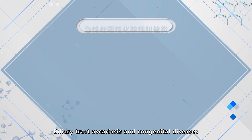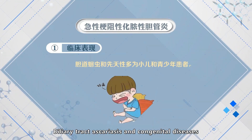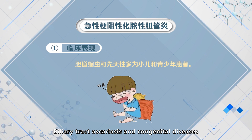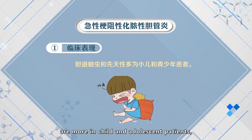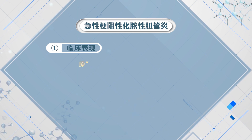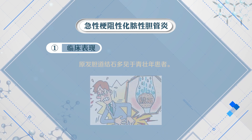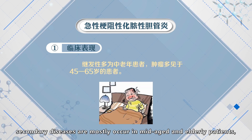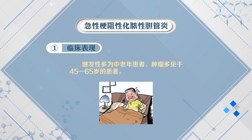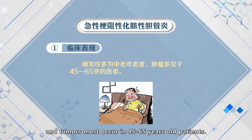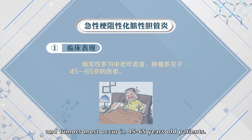Biliary tract ascariasis and congenital diseases are more common in children and adolescent patients. Primary biliary tract disease is more common in young adults. Secondary diseases mostly occur in middle-aged and elderly patients. Anatomical anomalies occur more in patients aged 14 to 16 years old.